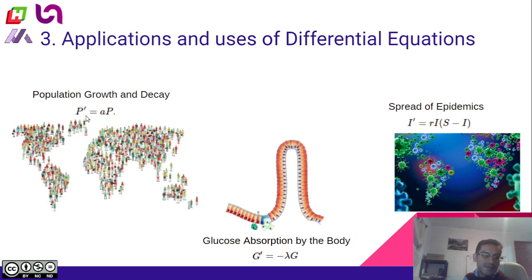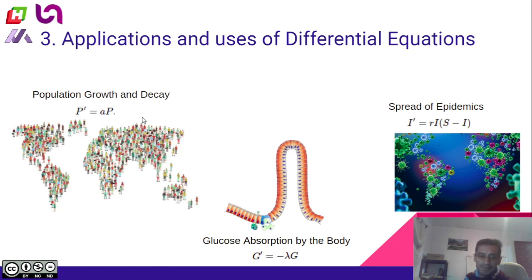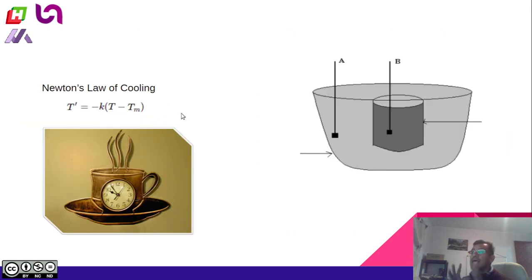If the rate of growth is positive, we are going to have a positive constant. If it is negative — meaning decay — we are going to have a negative constant. We can also apply differential equations to Newton's law of cooling, which describes how the temperature of a body or an object changes over time when placed inside another environment.